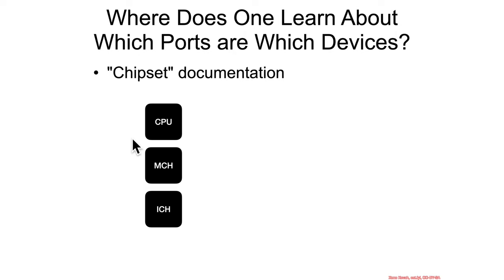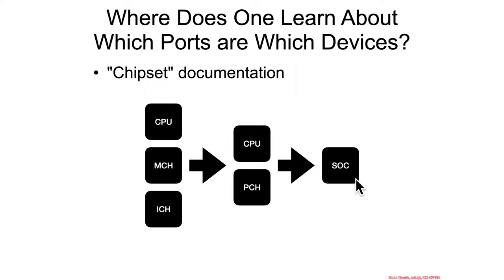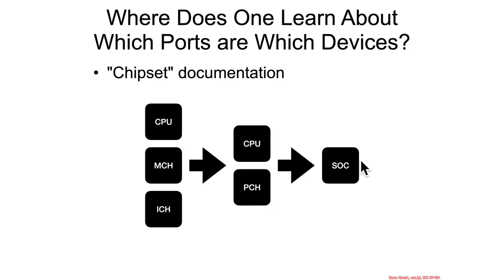Back in the day there was a literal chipset of chips: your CPU, the memory controller hub, and the I/O controller hub. Over time, Intel merged the I/O and memory controller hub, putting some of it into the CPU, and you landed on the CPU plus the platform controller hub. Further along, things tend toward system-on-a-chip where everything is combined into a single processor, common on laptops and embedded systems, though desktop systems still typically have a discrete platform controller hub.